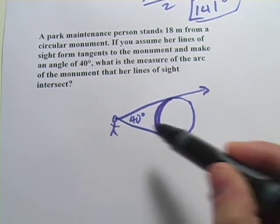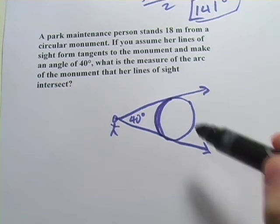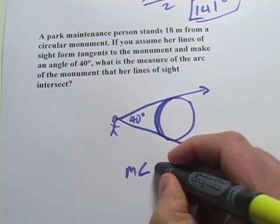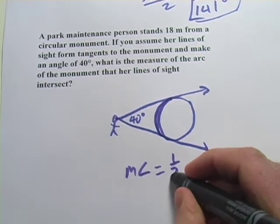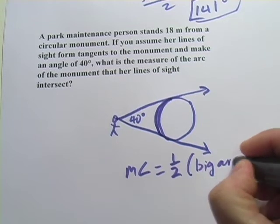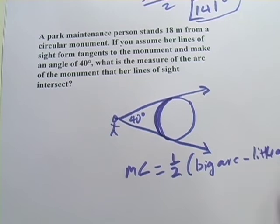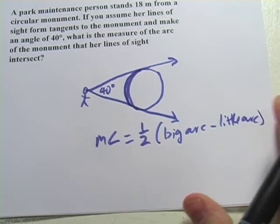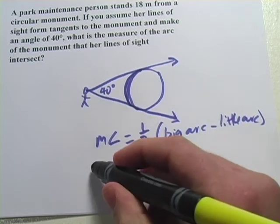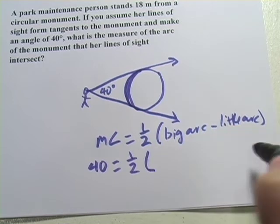Well when we have two tangent lines that intersect a circle, well intercept an arc of a circle, there's a formula for that. The measure of the angle equals one half of the big arc minus the little arc. Okay so that's our formula and we're just going to have to plug some values in here. We have the angle so 40 goes out here.